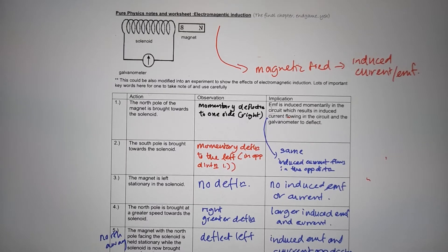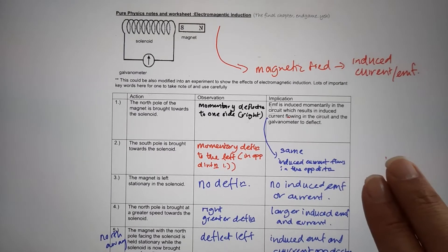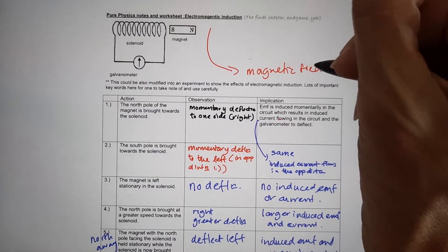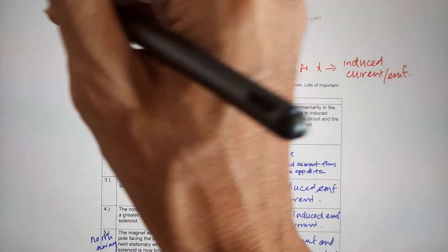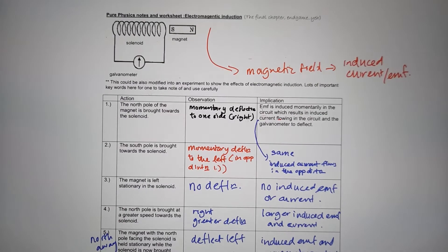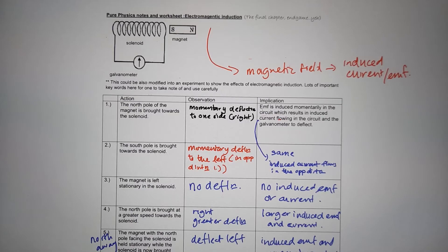Electromagnetic Induction. I'm going to do a quick revision on the chapter on Electromagnetic Induction. For this chapter, there are lots of important keywords and key phrases you must always take note of. For Electromagnetic Induction, what you are doing is that from a magnetic field and a coil of wire or just a wire, you are getting an induced current or EMF.